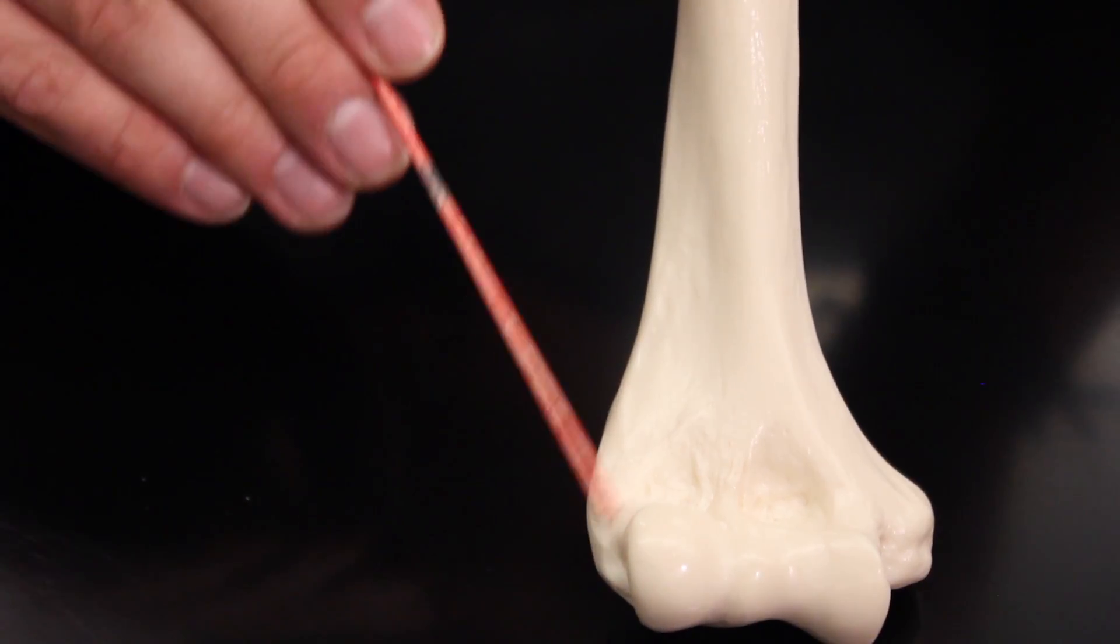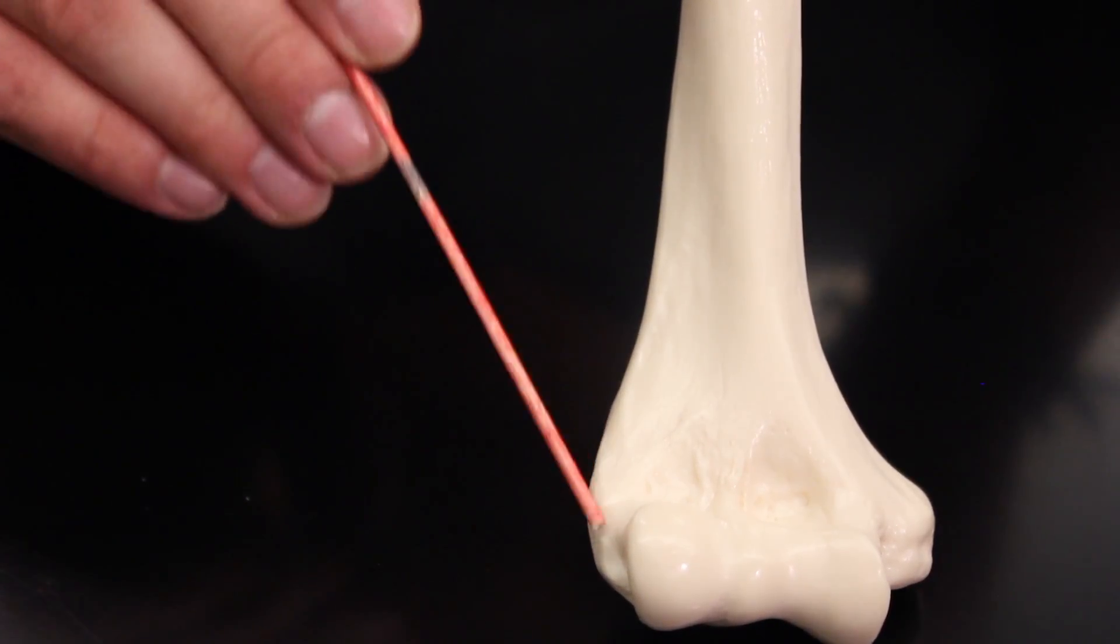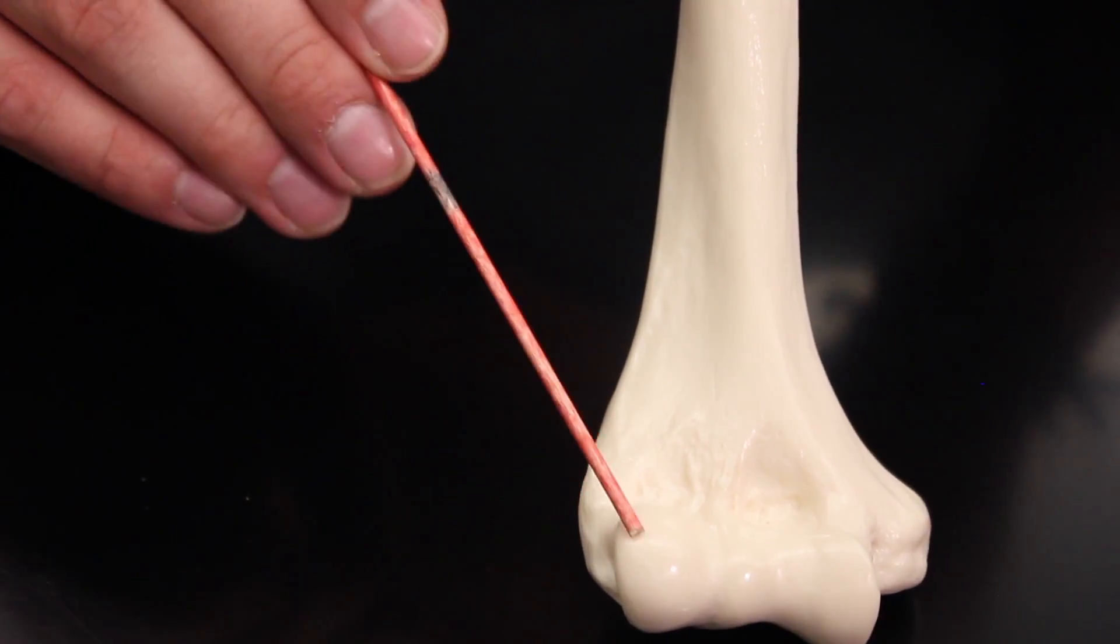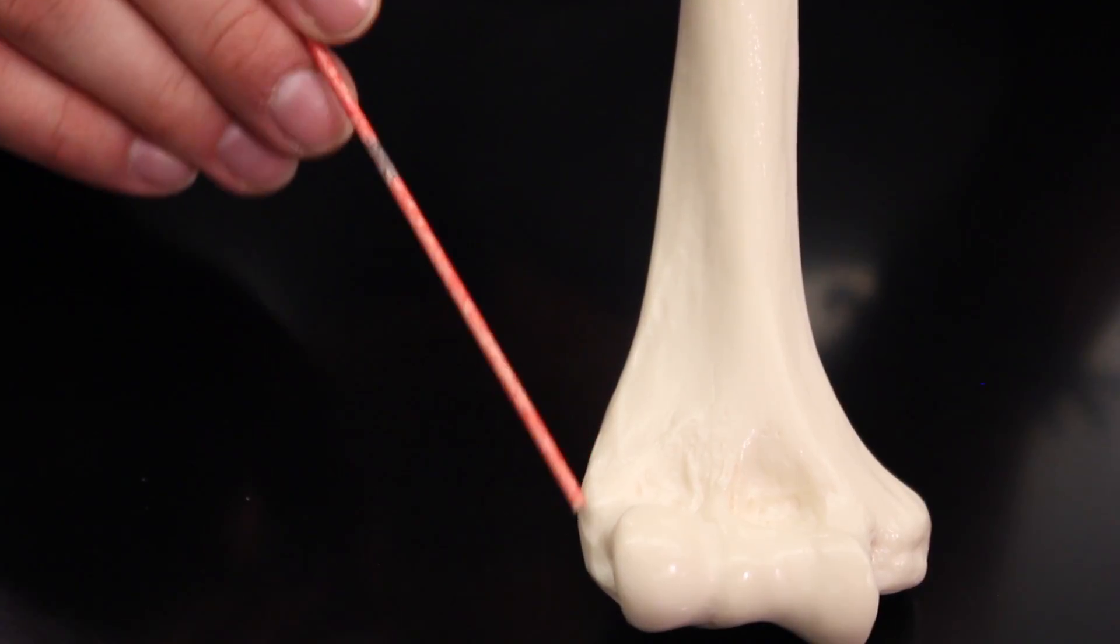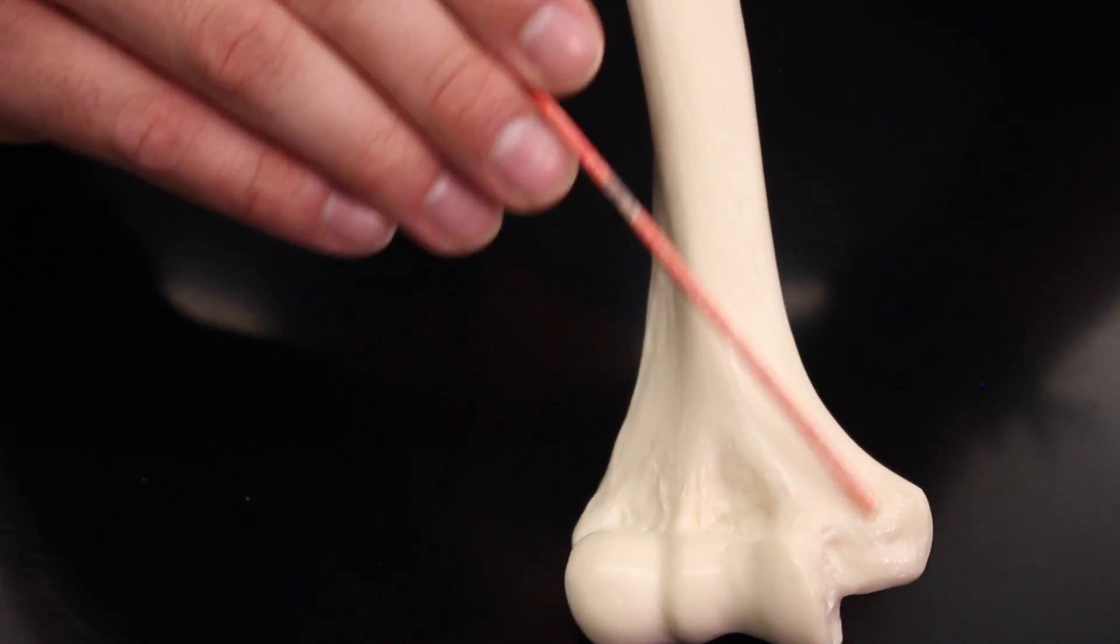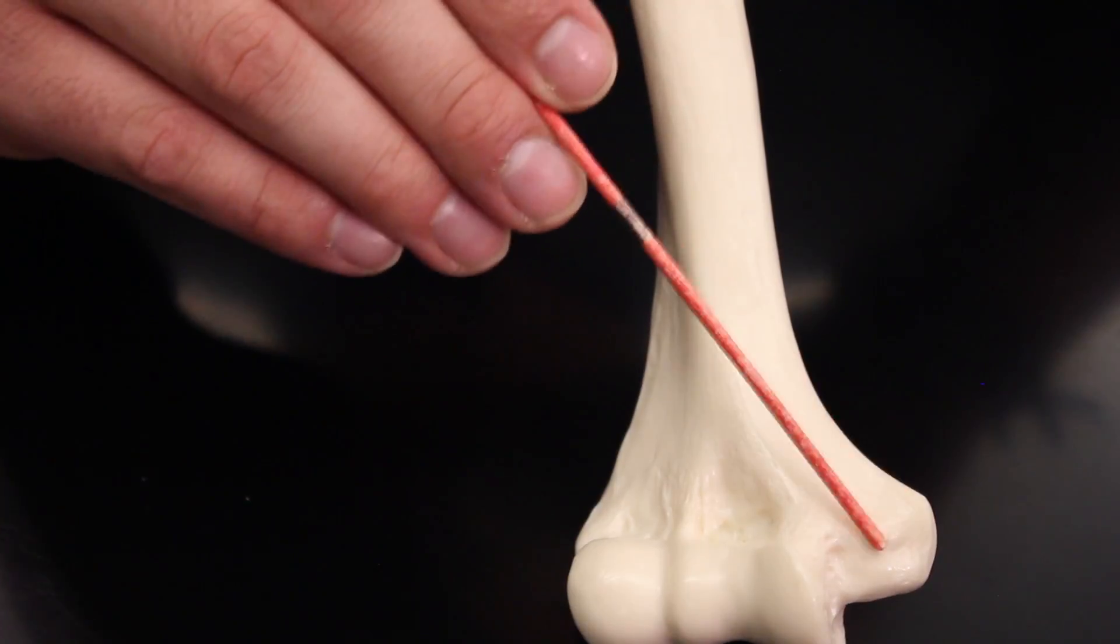If I come over here, this right here is the epicondyle. And this right here, since this is the lateral condyle, this is the lateral epicondyle. And if I come over here, since this is the medial condyle, this is the medial epicondyle.